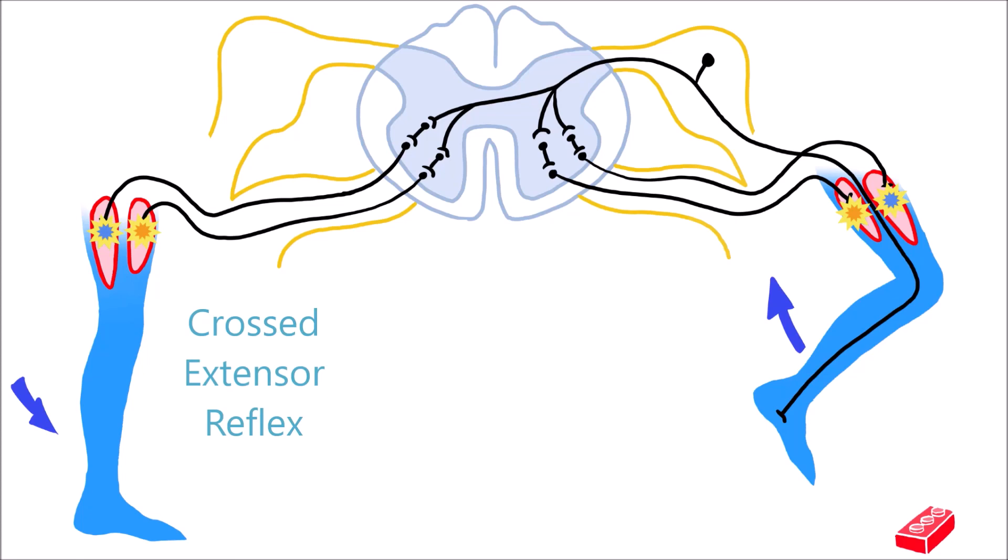The corresponding relaxation and contraction of the extensor and flexor muscles in the leg causes the leg that experienced the stimulus to withdraw from possible harm, and the opposite leg to extend to compensate for this sudden movement.